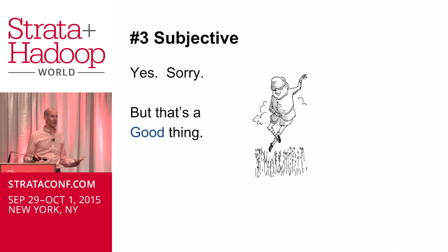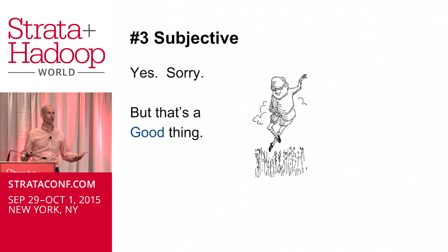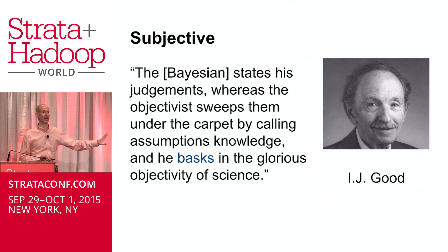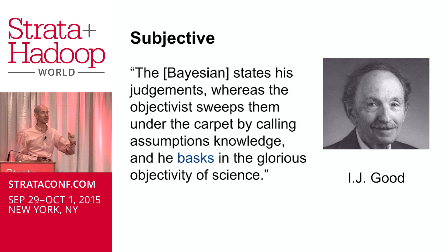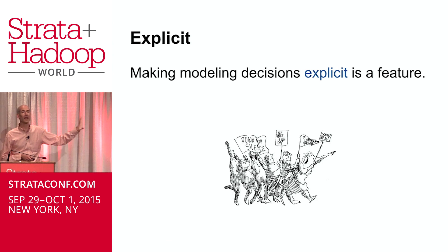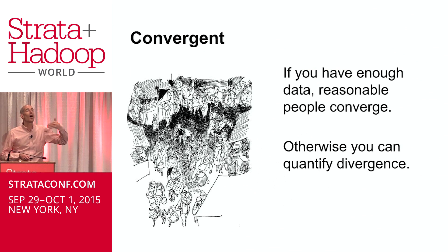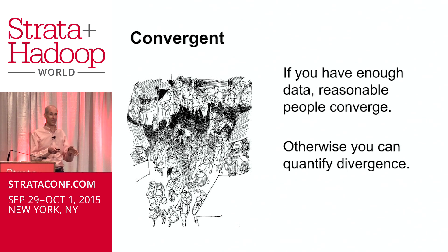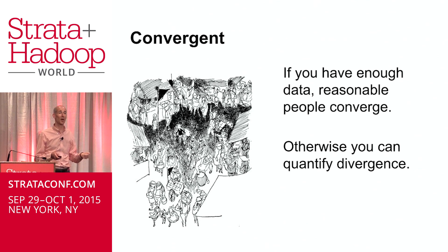Myth number three: the results you get are subjective because they depend on the prior. That is true — live with it. But I claim that is actually a good thing. Bayesian methods take your models and make them explicit. You're not pretending to be objective; you are addressing the fact that you're being subjective, putting your model on the table, making that a topic of discussion, and making sure you know what you don't know. Also, if you have enough data, people with different priors will converge. If they don't converge, then you need to know that, and quantifying that convergence helps you know what you don't know.